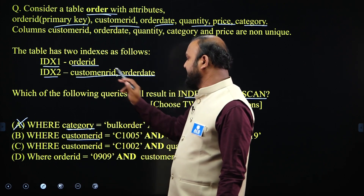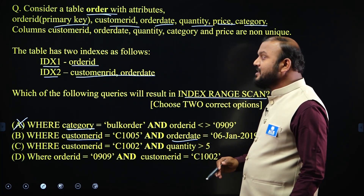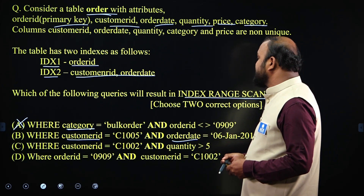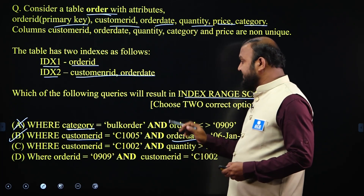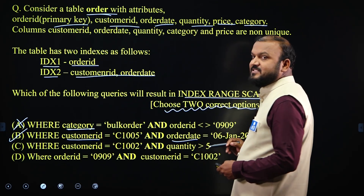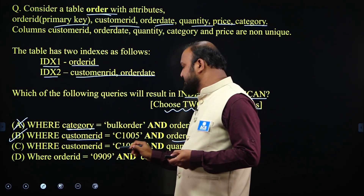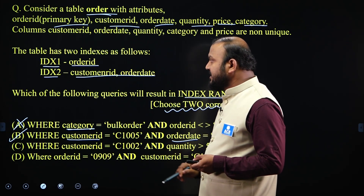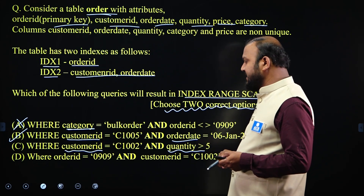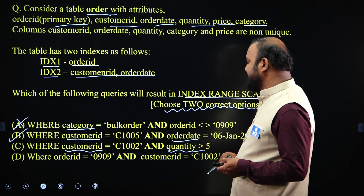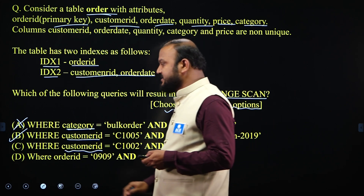Option B: customer ID and order date — we have an index on customer ID and order date together, so it requires searching on the index. B is the correct option. Note that the question says to choose two correct options. Option C: customer ID equals C1002, we have an index on customer ID. But quantity greater than 5 — we do not have an index on quantity, so with respect to quantity it requires a table scan. C is incorrect.